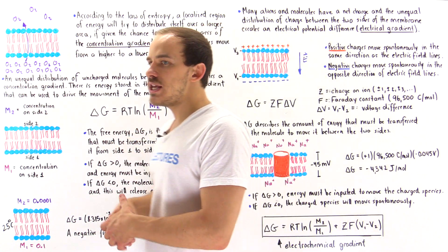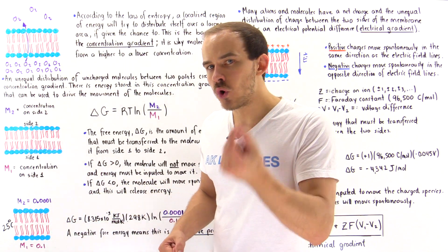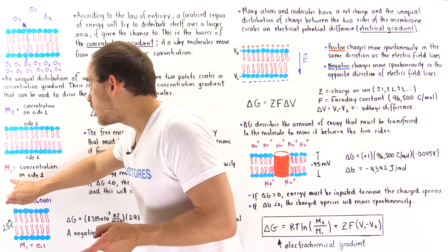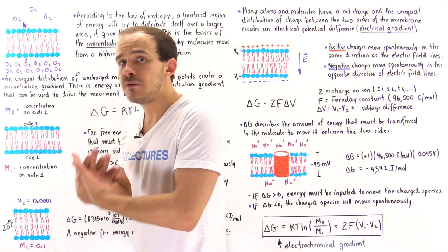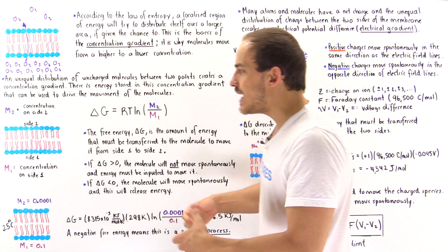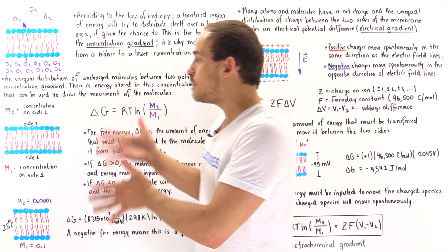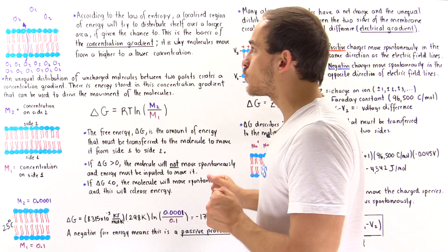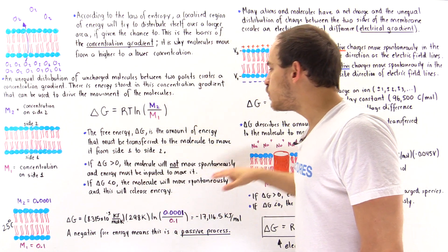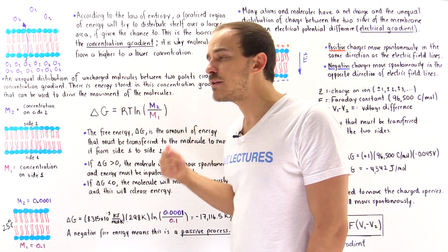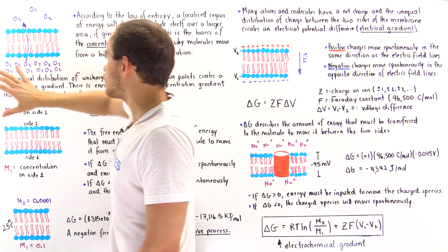If ΔG is positive, we actually have to input energy — we have to do work on the molecule to move it from side one, where the concentration is m1, to side two, where the concentration is m2. If we have to input energy, the process is essentially an active process, and this is an example of when active transport will take place. We are moving these molecules against the concentration gradient, from a lower concentration to a higher concentration.